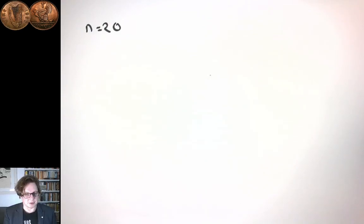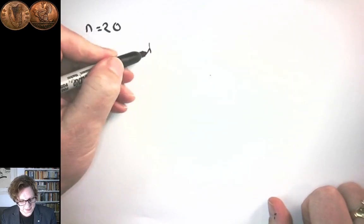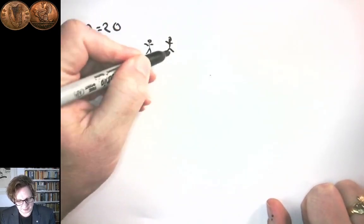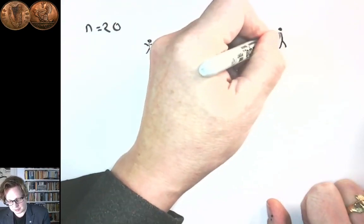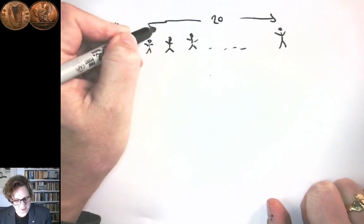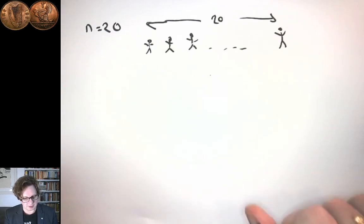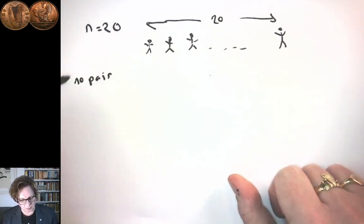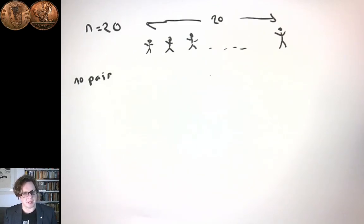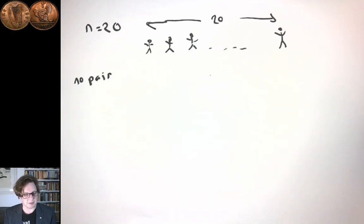The problem becomes one of distributing birthdays to the 20 people. You can imagine the 20 people lined up. We're going to give each of them a birthday. What we're interested in is the chance that at least two people have the same birthday. Calculating that sounds quite complicated because the problem of at least two people having the same birthday includes precisely two people having the same birthday, three people having the same birthday, two people having one birthday and two people having another, and everybody else having different birthdays.